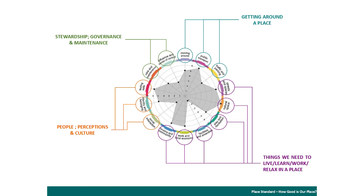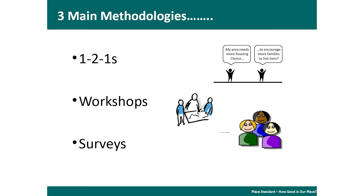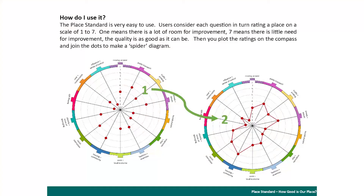The themes split into four areas: one about getting around a place, things that we do within that area, the whole aspect of people, perceptions and culture, and finally how we manage and govern the places that we live in. In terms of how you use it, you could do it one-to-one, run workshops, or use surveys. The completion of the tool involves asking the question, having a conversation, and scoring between one to seven — where one needs a lot of improvement and seven less so.